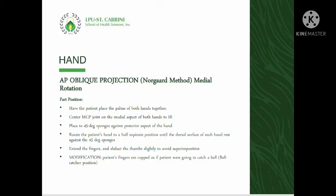To obtain the Norgaard method position, have the patient place the palms of both hands together and center the MCP joints of the medial aspects of both hands to the IR. A 45-degree sponge is placed against the posterior aspect of both hands. Rotate the patient's hands to a half-supinated position until the dorsal surface of each hand rests against the 45-degree sponges. Extend the fingers and abduct the thumb slightly to avoid superimposition. A modification is to have the patient cup their fingers as if catching a ball — this is the ball catcher's position.